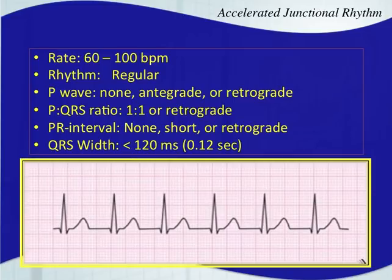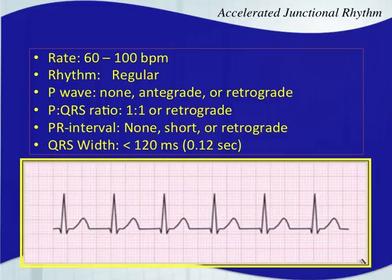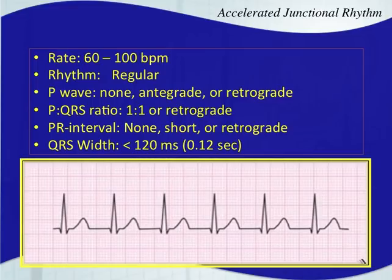An accelerated junctional rhythm is the same as a junctional escape rhythm except it's a little bit faster. An accelerated junctional rhythm has the same rate as a normal sinus rhythm: 60 to 100 beats per minute. The same rules apply — it should be regular, you'll either have no P wave, an antegrade P wave with a short PR interval, or a retrograde P wave. If you see a P wave, only one for every QRS. The QRS width should still be narrow.